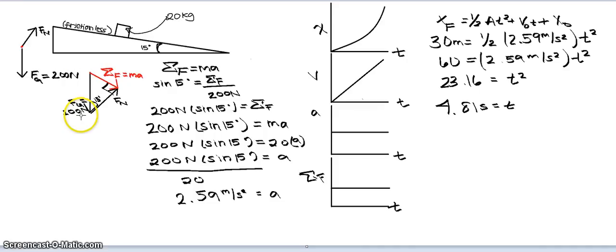Our hypotenuse is the 200 newtons, while our opposite is the net force. After writing down the equation of sine 15 equals net force over 200, I'd multiply 200 from both sides. And then, I substituted net force for mass times acceleration.